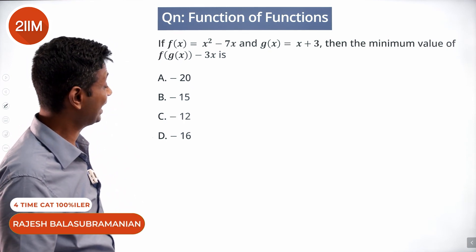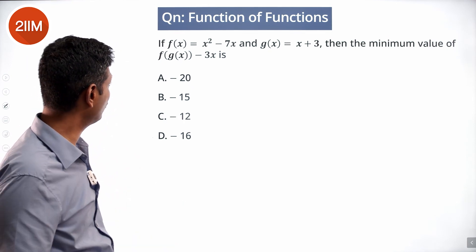f of x is x squared minus 7x and g of x is x plus 3. Find the minimum value of f of g of x minus 3x.